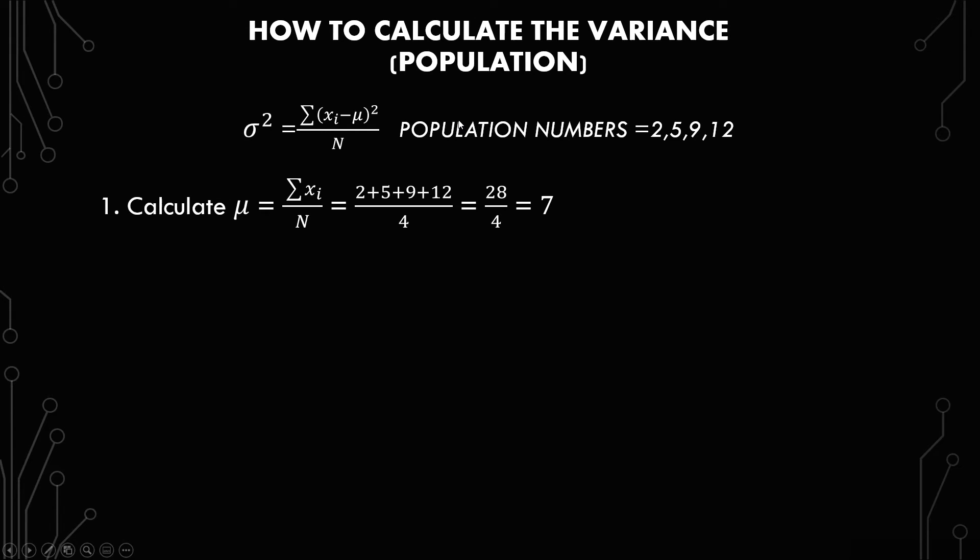The first thing you need to do if it's not given to you is calculate mu, which is the sum of each x over n, which is 2 plus 5 plus 9 plus 12 over 4, which equals 28 over 4, which equals 7.